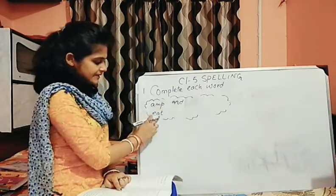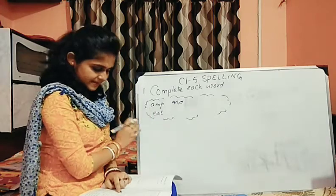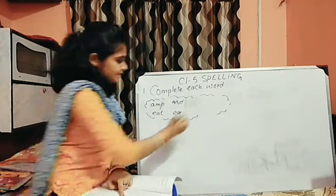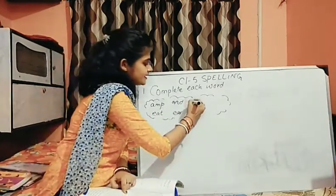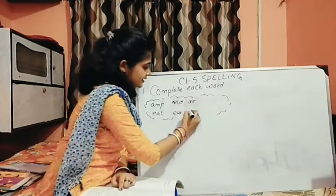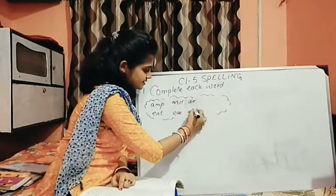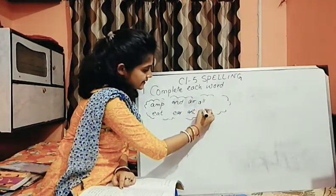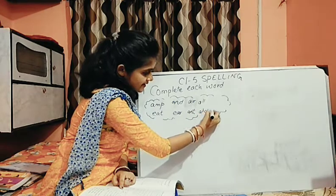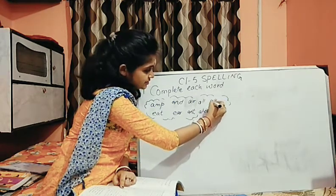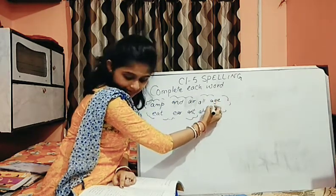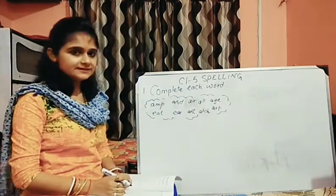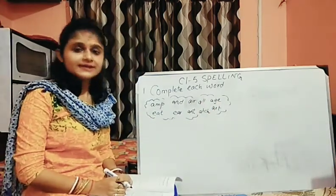The hint letters are: A-M-P, E-A-T, A-N-D, E-A-R, then A-I-R, A-N-T, A-L-L, A-T-C-H, A-G-E, and A-R-T. Now these are your hints.